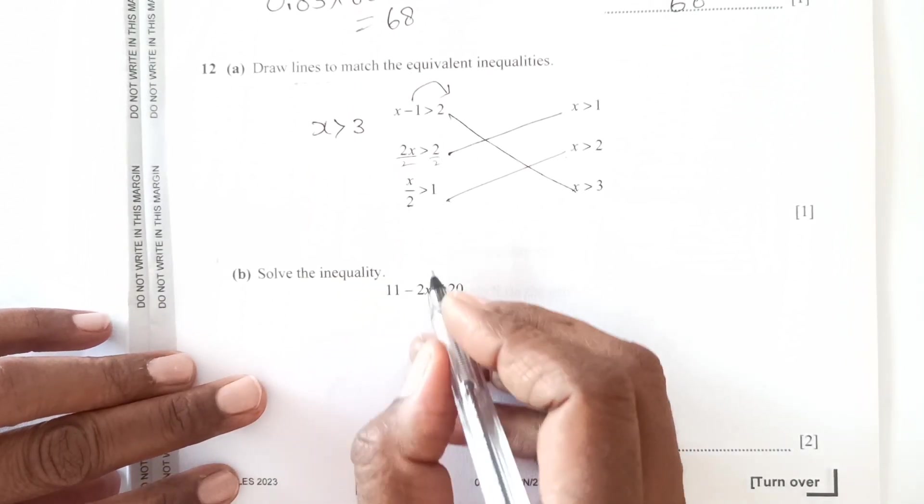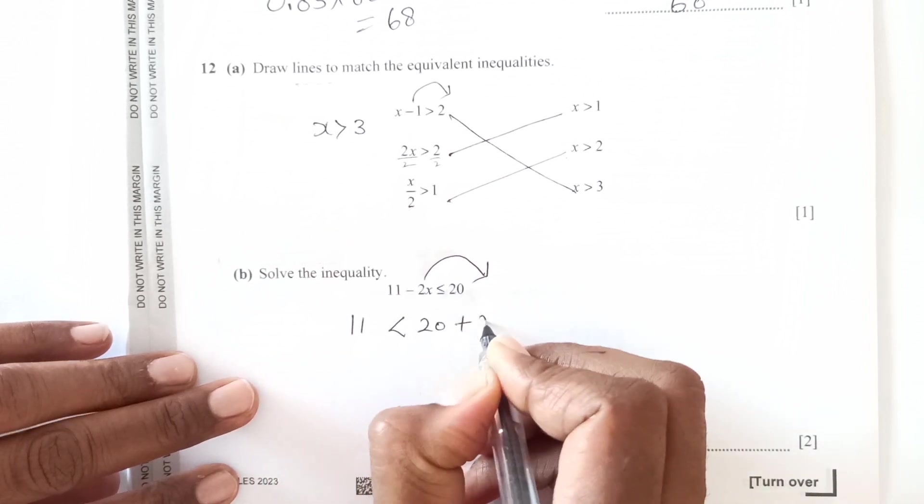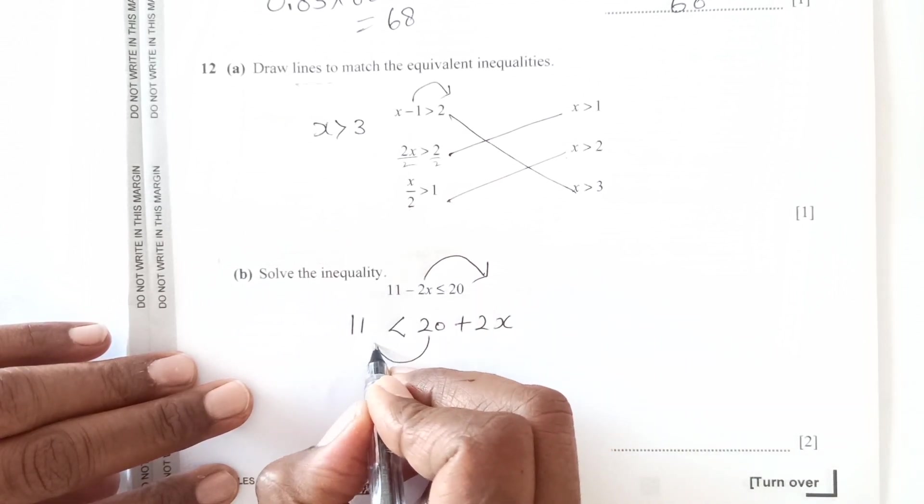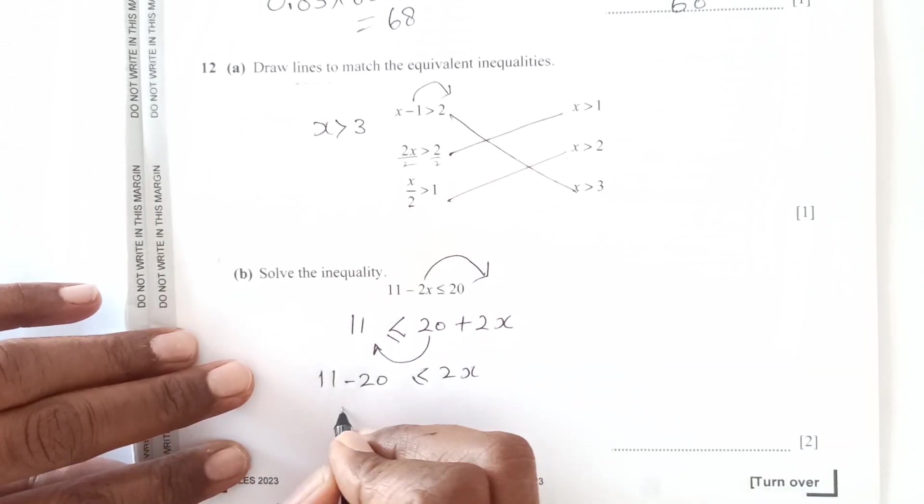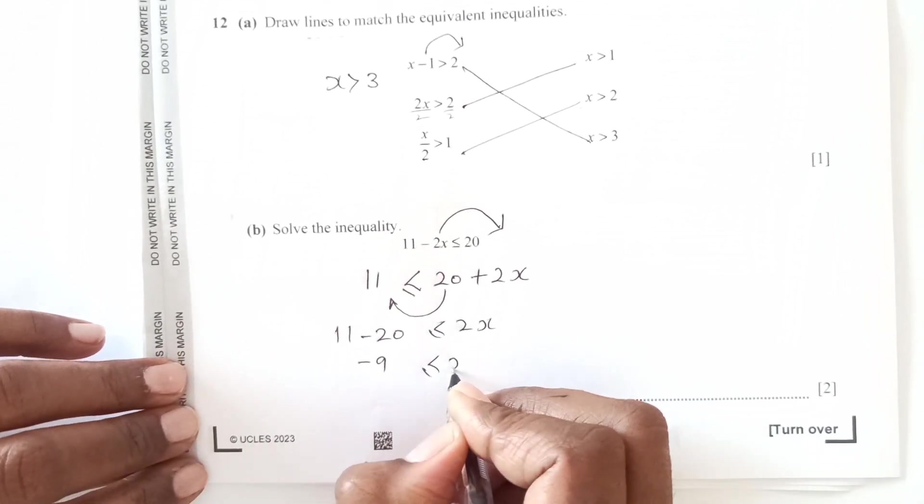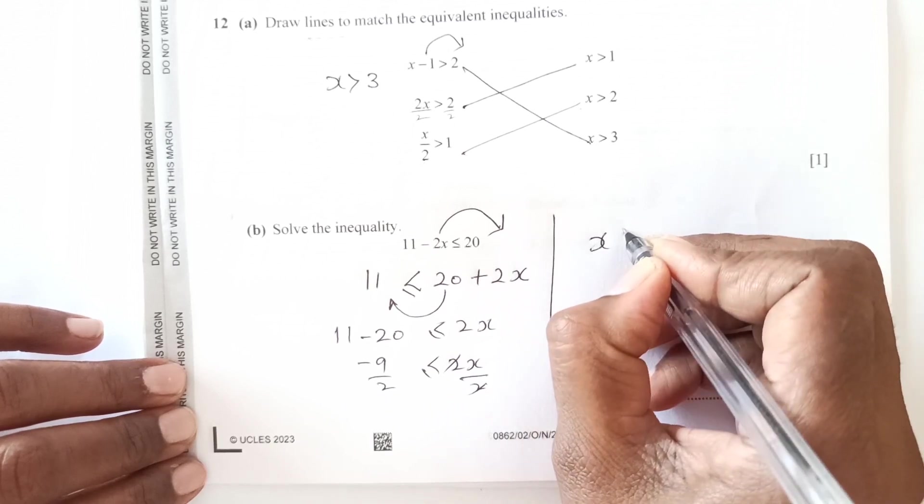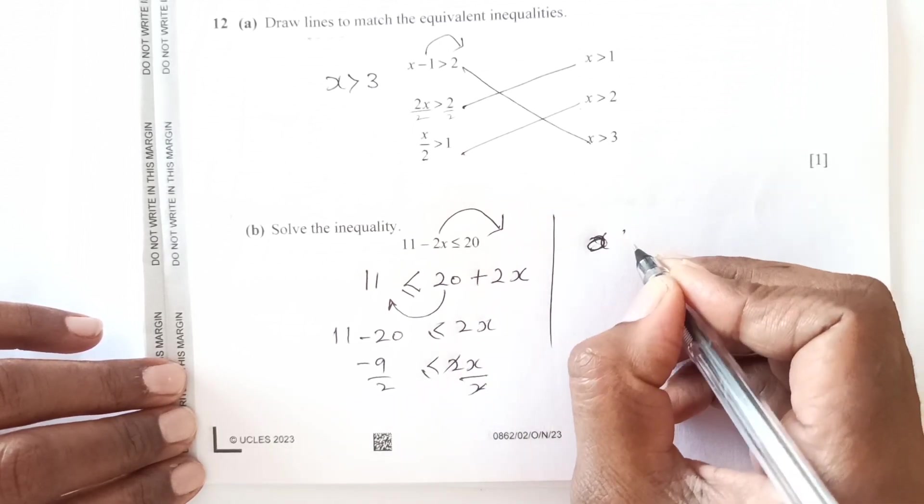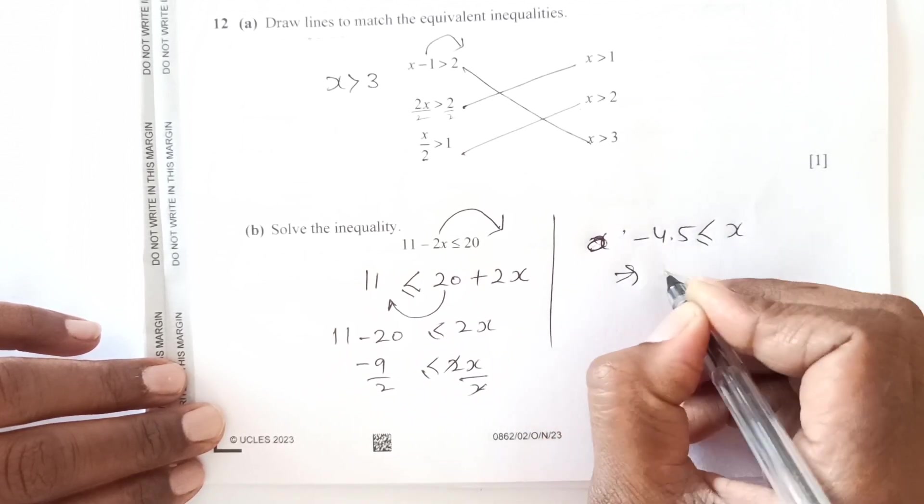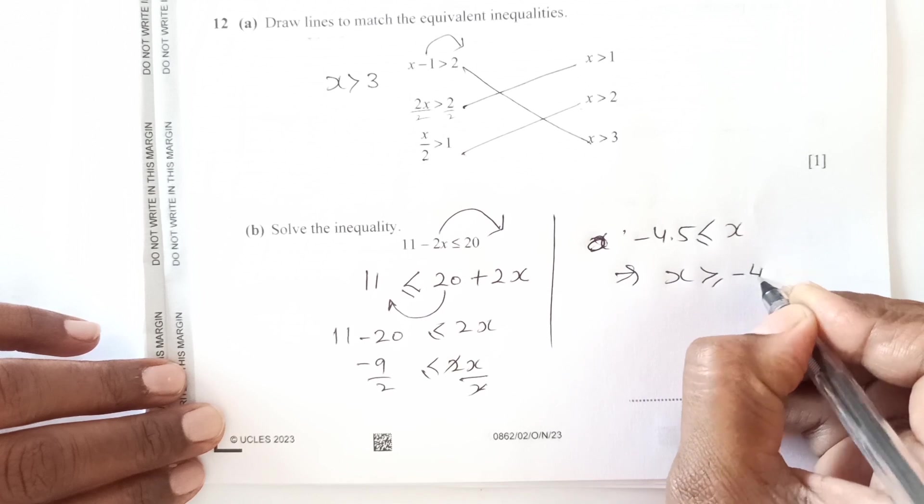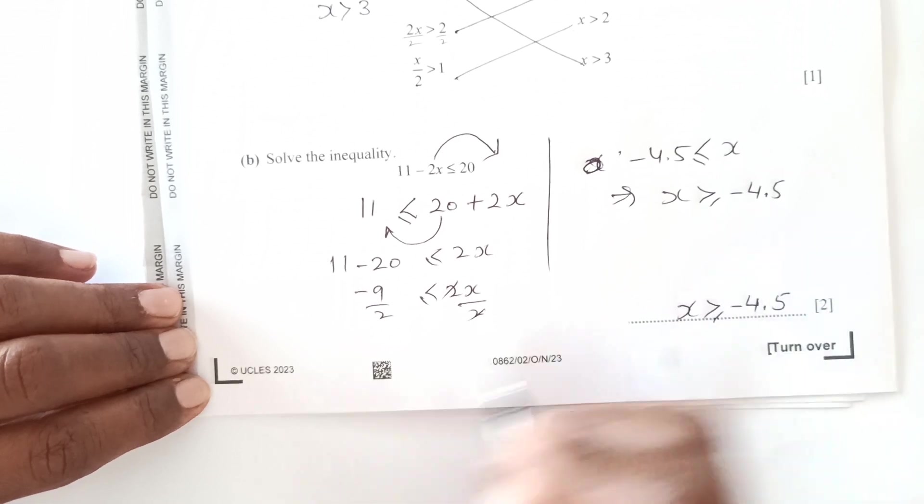Now solve this. We will shift this to other side. 11 is less than 20 plus 2x and bring 20 on other side. 11 minus 20 is less than or equals to 2x. This is minus 9 less than or equals to 2x over 2, over 2. So x is negative 9 over 2. This is 4.5 is less than or equals to x. So that means x is greater than or equals to negative 4.5.